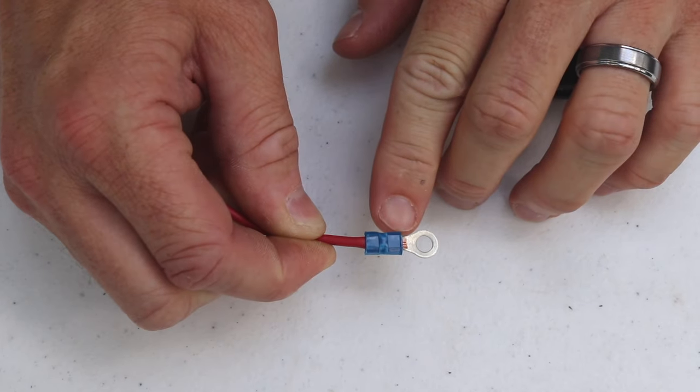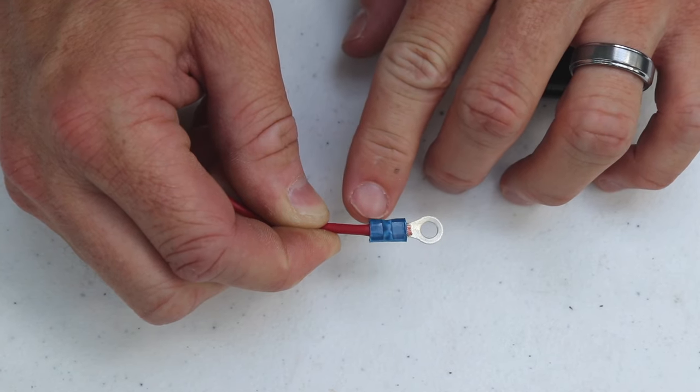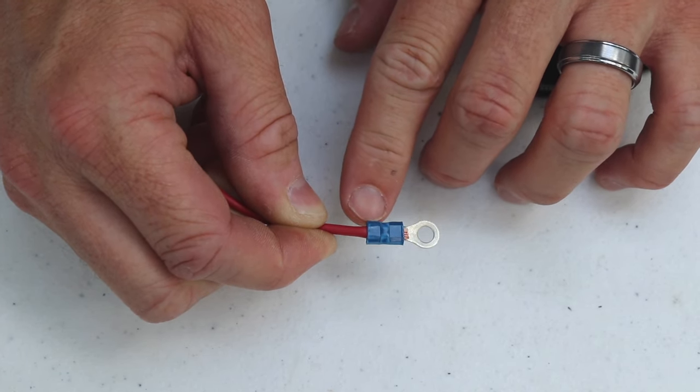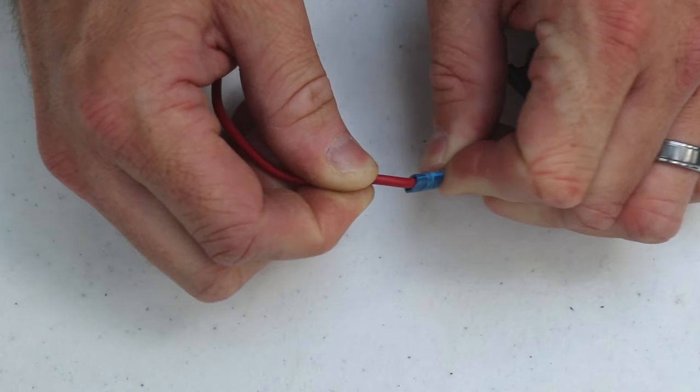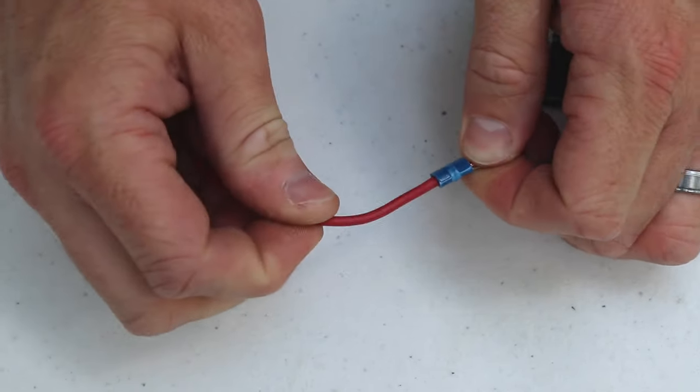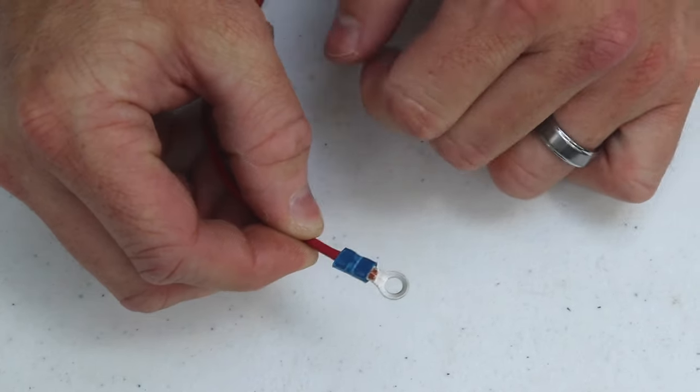Now you can see where you've made a crimp on the end here for the electrical portion of the crimp, and on the end over here it's crimped down the plastic insulation onto the wire so that provides strain relief. So that when the wire gets tugged on it's not actually pulling on the terminal but on the plastic.